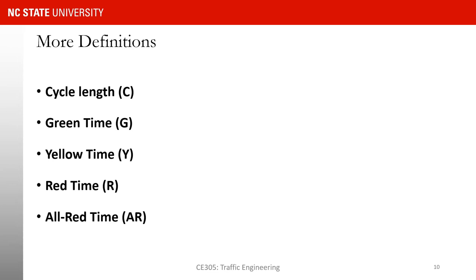Why do we use all-red time? We use all-red to allow vehicles that entered the intersection before the signal turned red to clear the intersection. We show red signals to all movements so that no one enters and those already inside can leave. A typical duration for all-red is usually between one and two seconds, and the duration also depends on the width of the intersection streets.